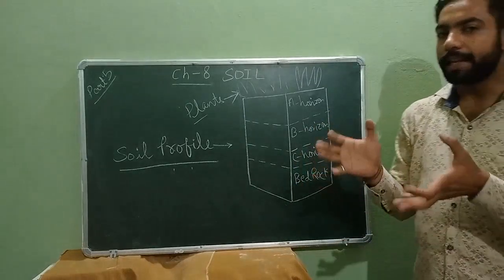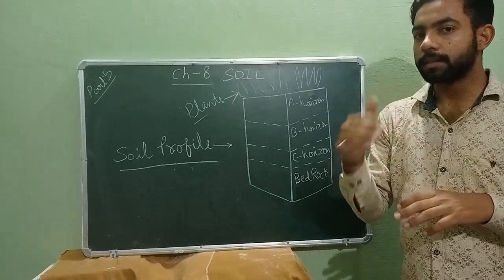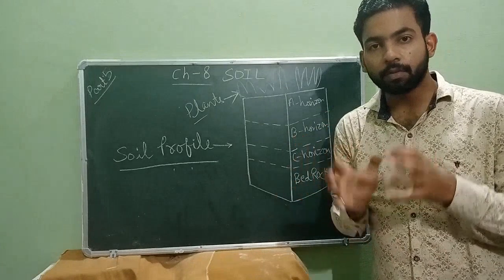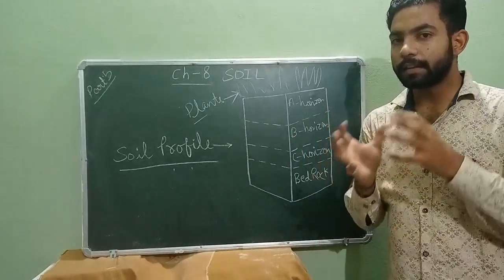B horizon: It is less fertile than A horizon because it has less humus in comparison to A horizon. It is made up of rocks, minerals, and a little bit of humus. It is lighter in color than A horizon.